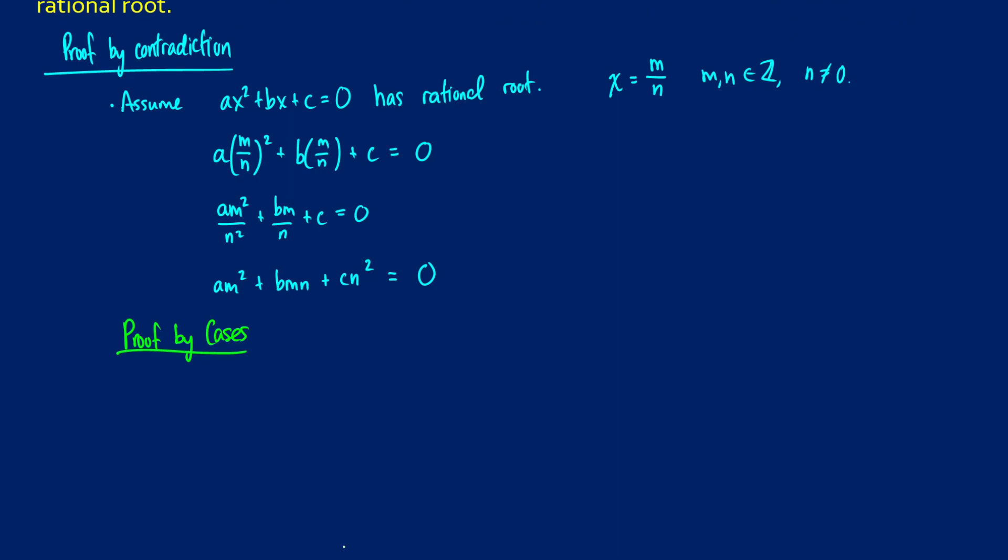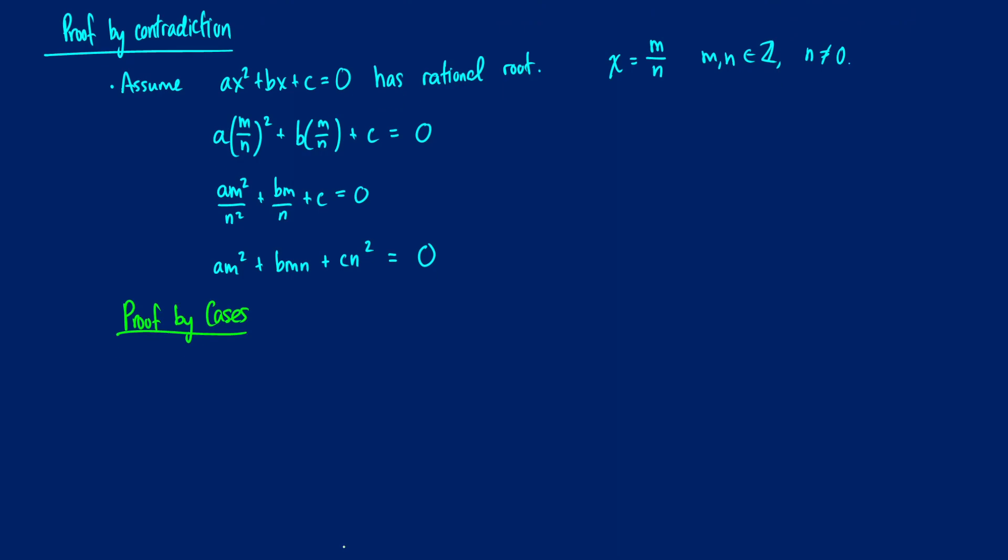So there's some combinations of types of integers that m and n can be. So first of all, let's ask ourselves, what happens if m is even, and then we have n even?